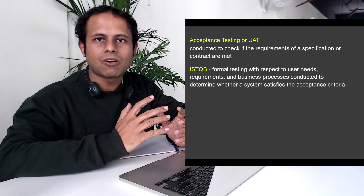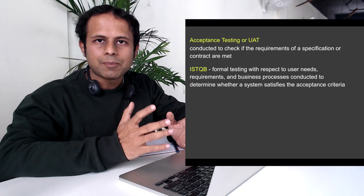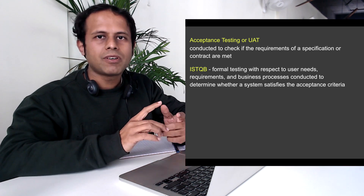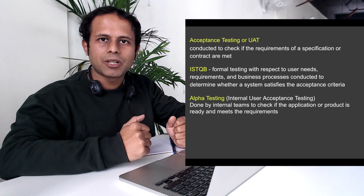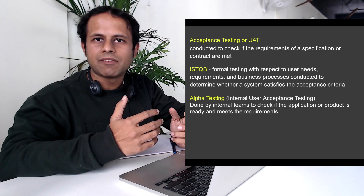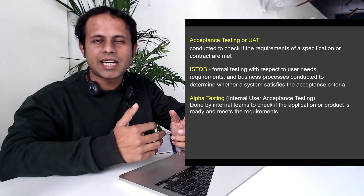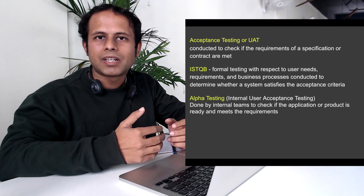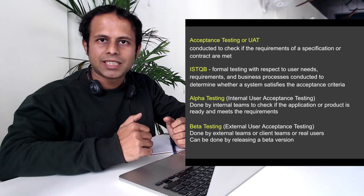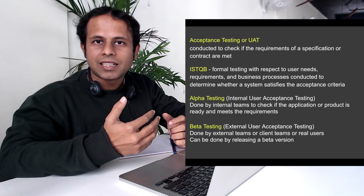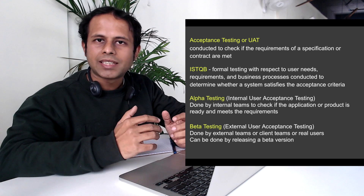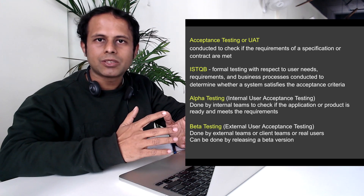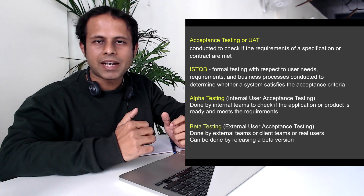There are two types of user acceptance testing: alpha testing and beta testing. Alpha testing is also called internal user acceptance testing because it is done by internal teams — the teams that develop or test — to check that all the requirements are met. Sometimes organizations also release a beta version of the application so that users can test it and give their feedback, which is a form of beta user acceptance testing.